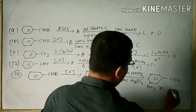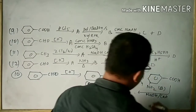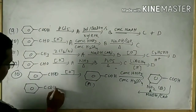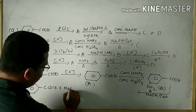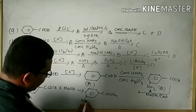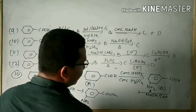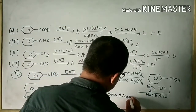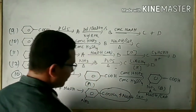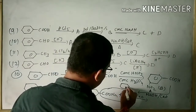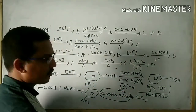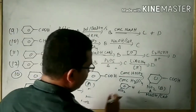Now I will do question number 10. Your benzaldehyde is subjected to oxidation — when benzaldehyde is subjected to oxidation, then benzoic acid is formed. Now benzoic acid is subjected to reaction with concentrated HNO3 and concentrated H2SO4 — this is said to be nitration. NO2 group will be attached at the meta-position because COOH is a meta-directing group. This product is said to be A, and this is said to be B. Now B is treated with sodium hydroxide, and the meta-nitrobenzoic acid reacts with sodium hydroxide. The NO2 is present at the meta-position, and then NO2 is further reduced, and this is your product C.